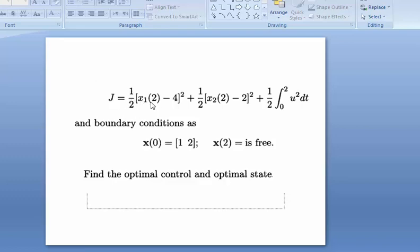J equals half X1(2) minus 4 squared plus half X2(2) at time 2, the final time, minus 2 all squared, plus half integration from 0 to 2 of u squared dt.